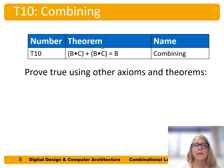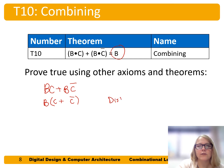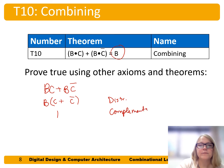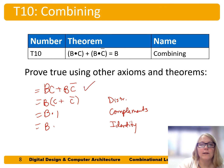We can also prove the combining theorem is true using other axioms and theorems. Starting with the left side B·C or B·C̄, we want to make it equal to the right side. We factor out B using distributivity to get B·(C or C̄), and we know that C or C̄ equals 1 using complements. This gives us B·1, and B·1 is just B using identity. So B·C or B·C̄ equals B.